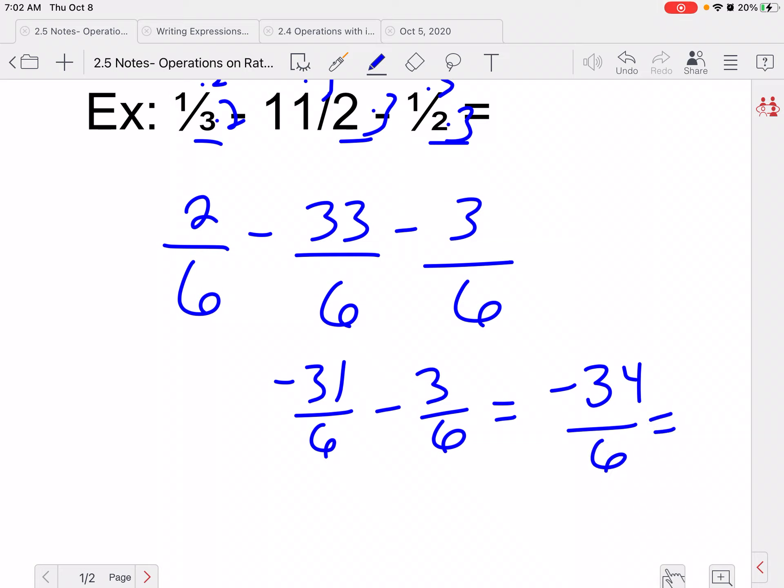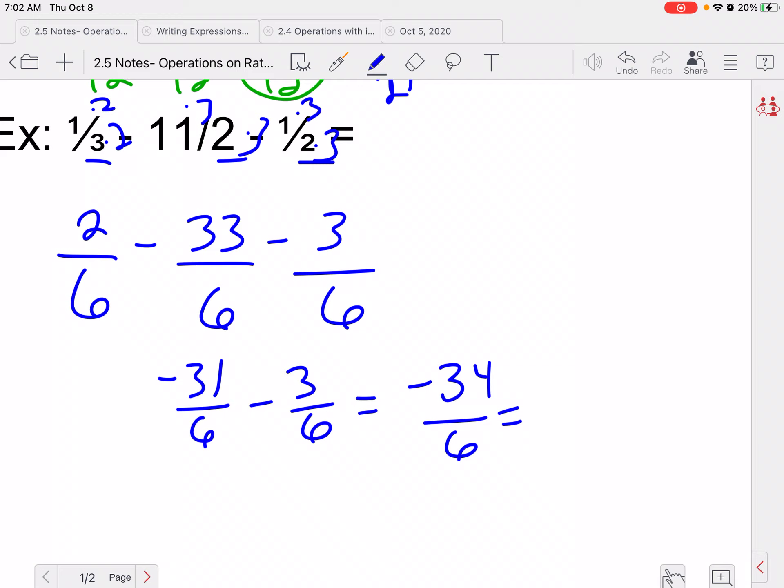And again, anytime I have a fraction answer, I can reduce it. You could put it as a mixed number if you'd like, but you don't have to. So 2 goes into both of those. 2 goes into 34, 17 times. And we keep the negative sign. 2 goes into 6, 3 times. So we get -17/3. I hope you have a wonderful day and we'll talk to you later. Bye.